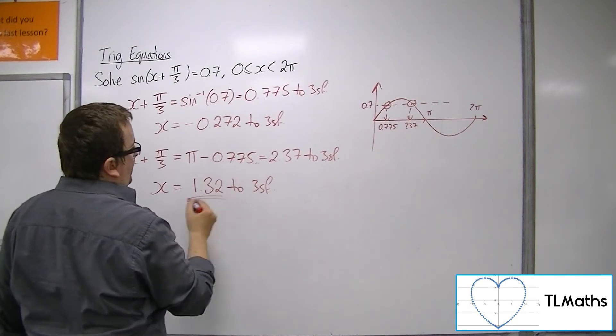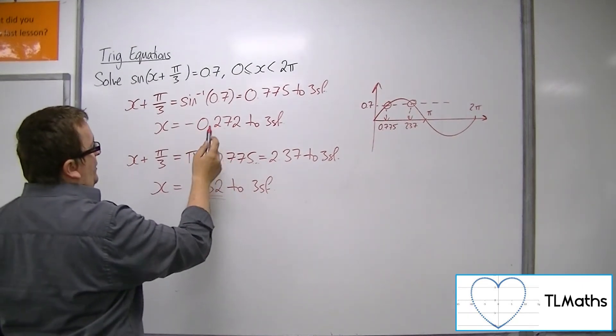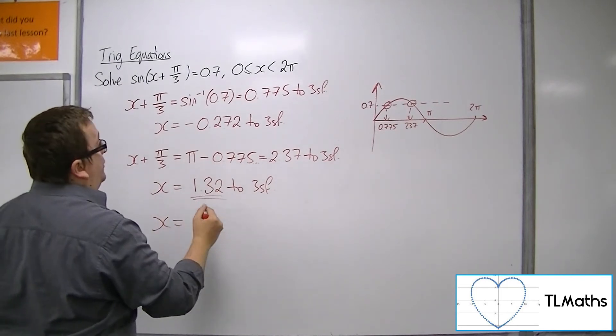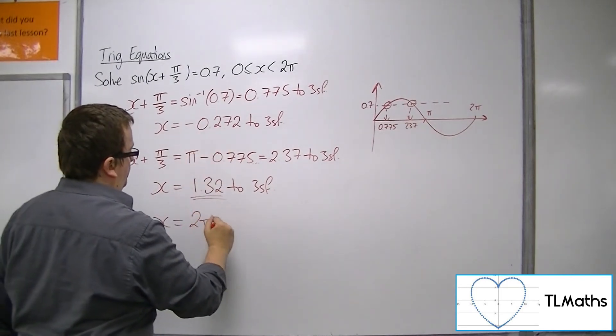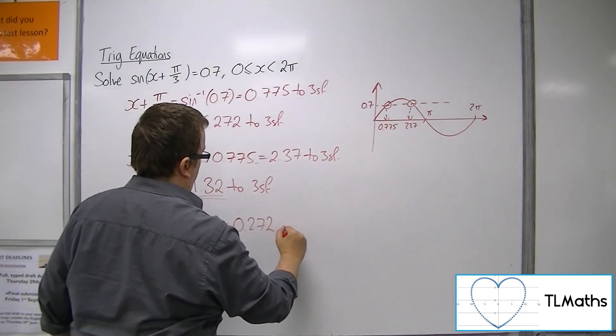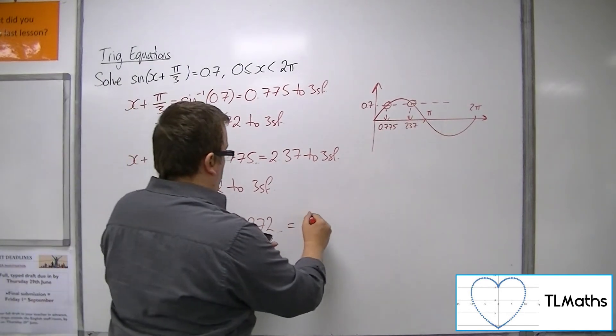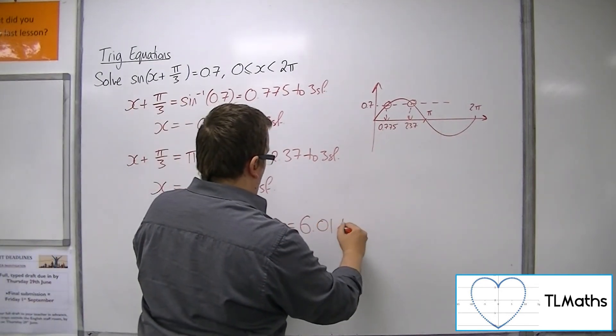Now, this answer is perfectly fine because it's between 0 and 2π, but this one isn't. So I've got to add 2π to that to get a solution that is within the range. So that's 6.01.